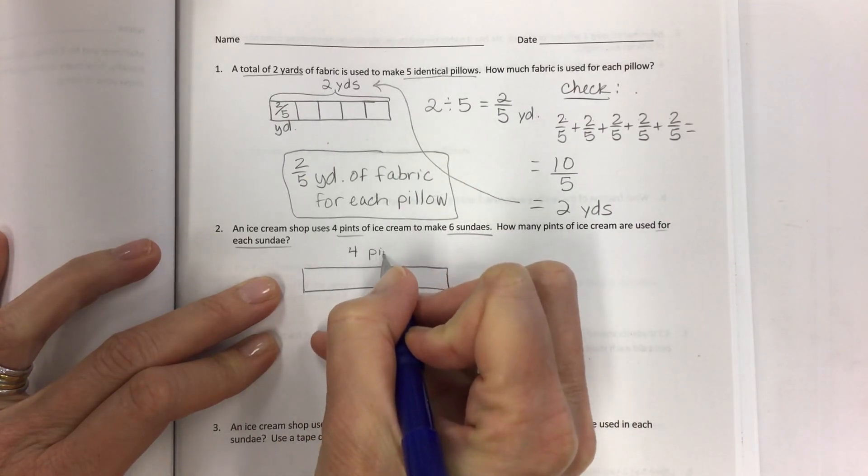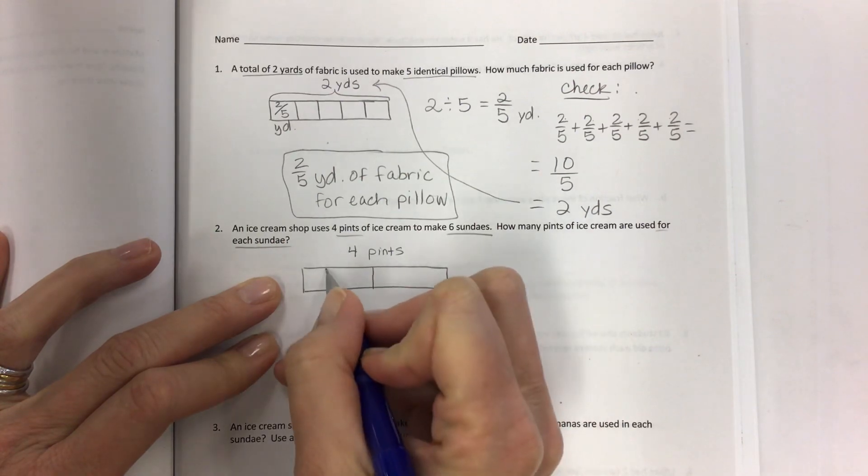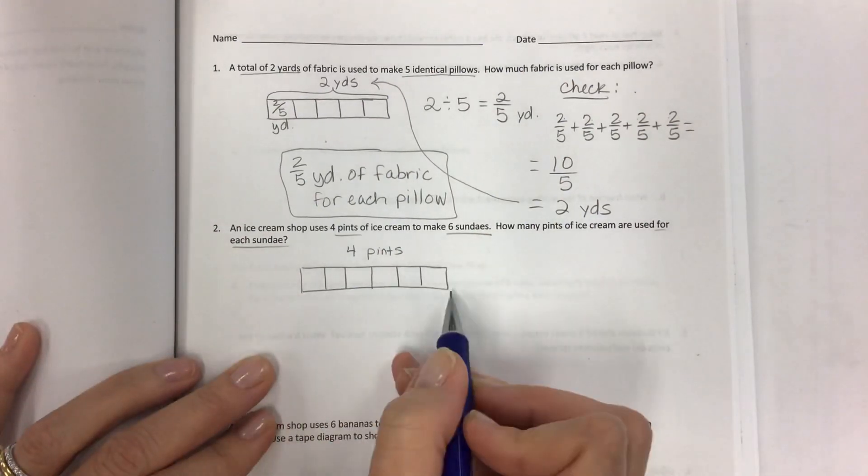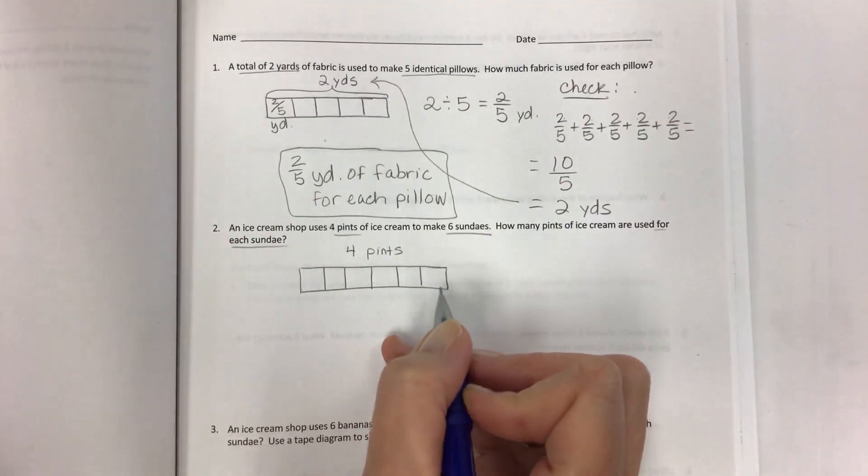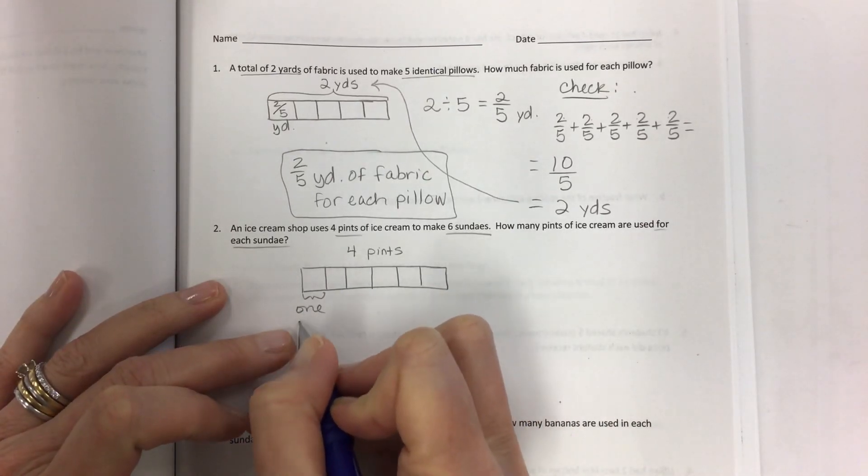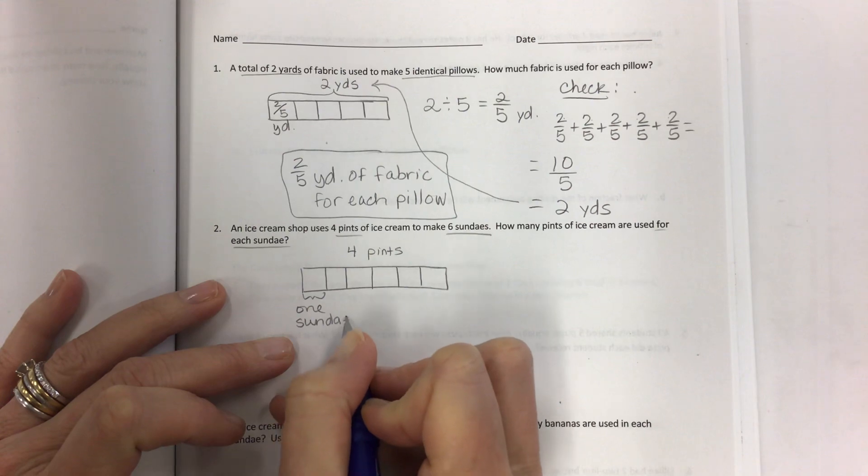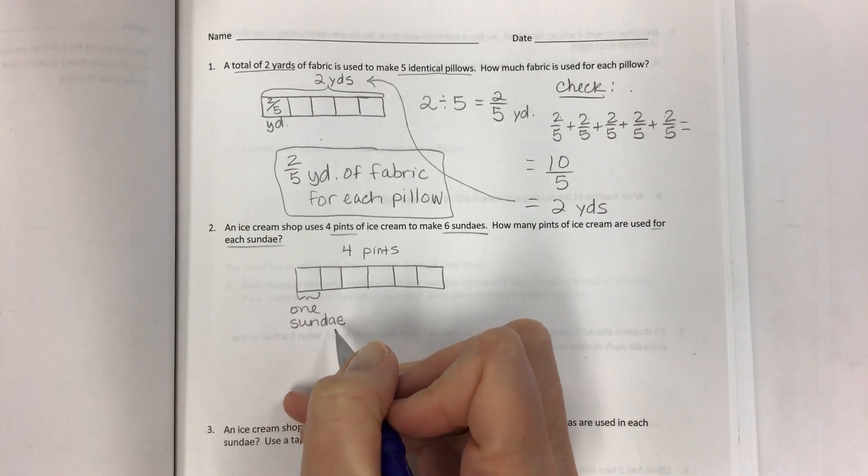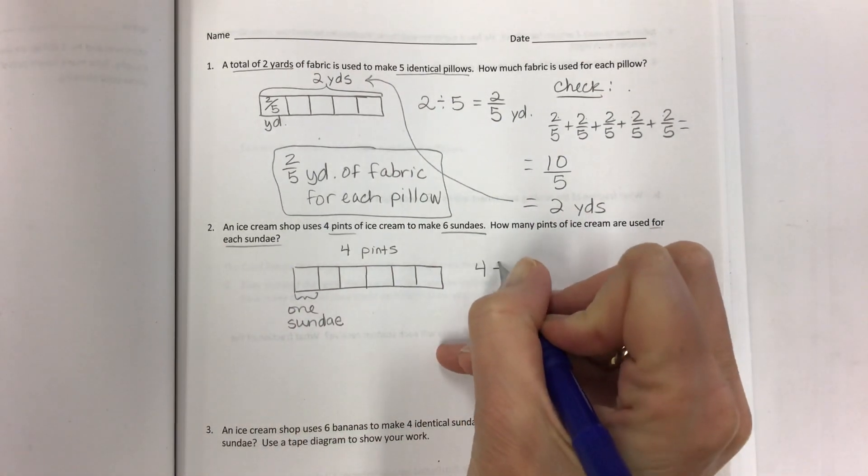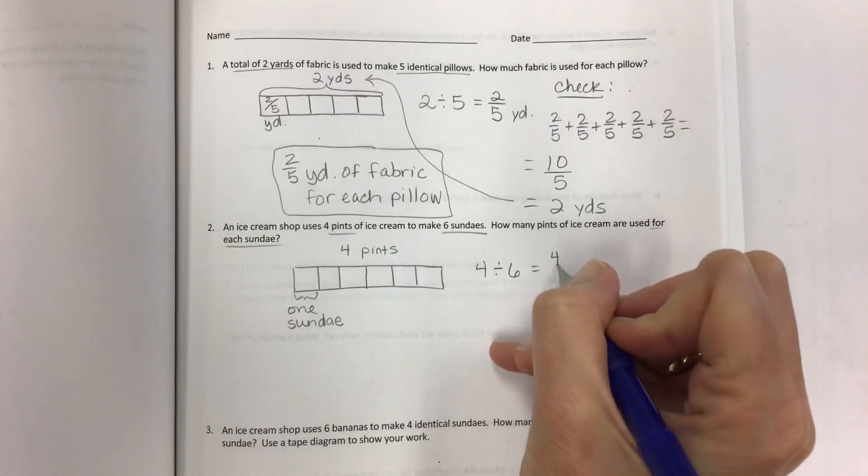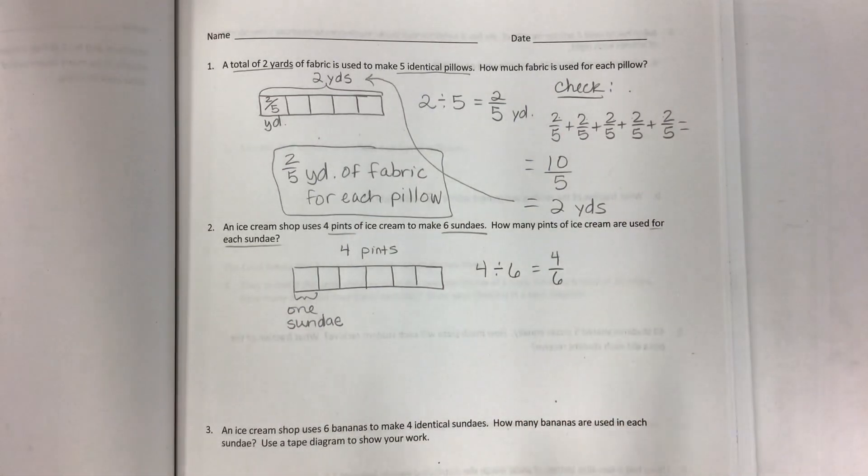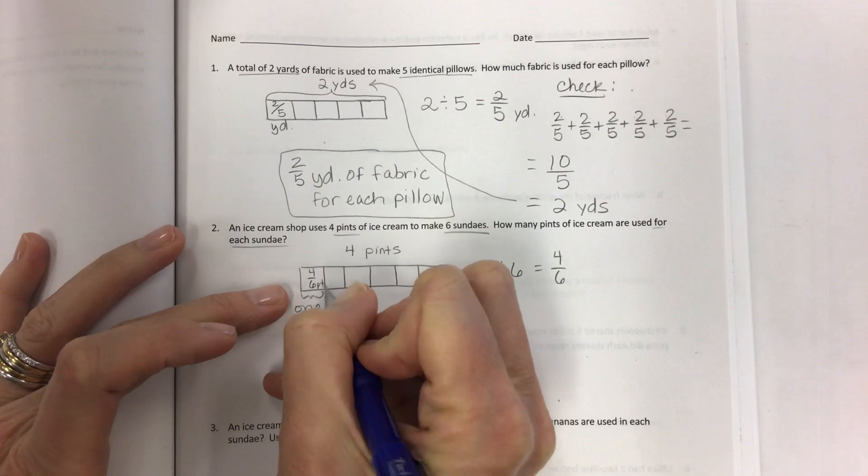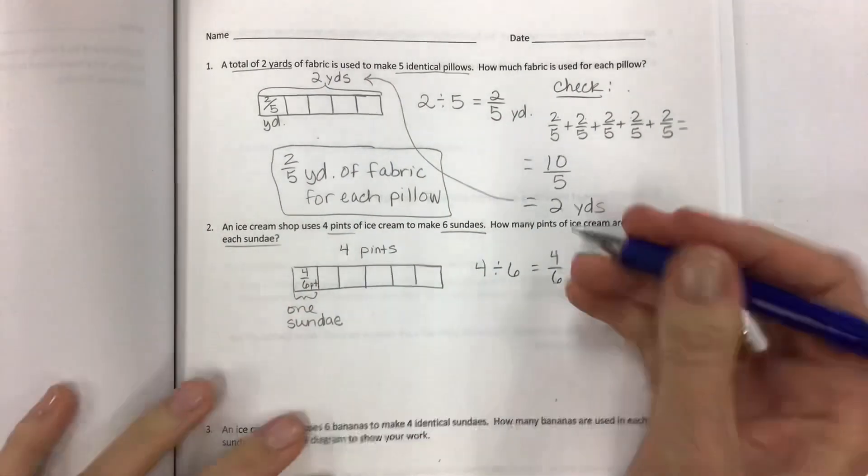How many things are we making? I have four pints and I'm making six sundaes. So divide it in half and then make each half section into three pieces. So each of these represents one sundae. If all I have is 4 divided by 6, I get four-sixths of a pint for each sundae. That's your answer.